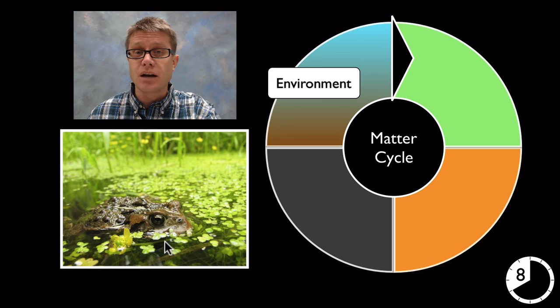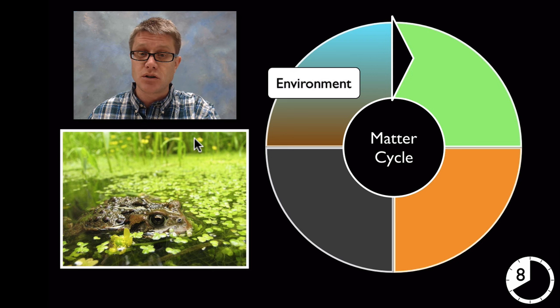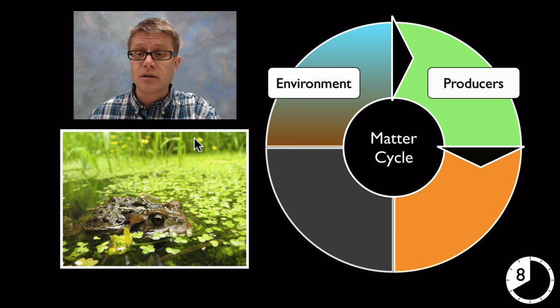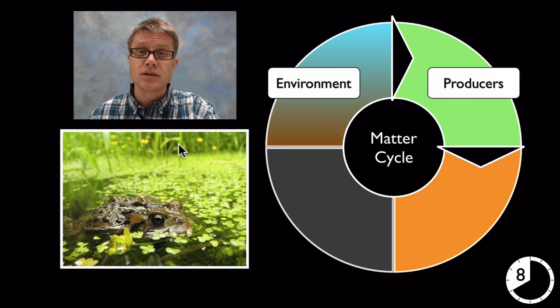And so basically it all begins with the environment. So what's some type of matter that we would find in the environment? Carbon dioxide would be something that's found that you can't see in this picture. But it's going to become part of the producers or part of the plants. And so that carbon dioxide is being used by plants through photosynthesis to create sugar, to actually create the plant.